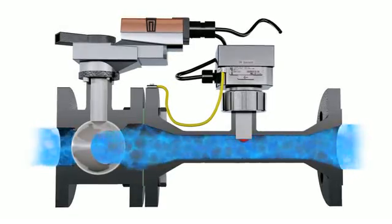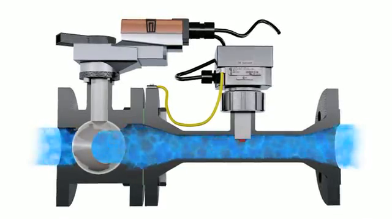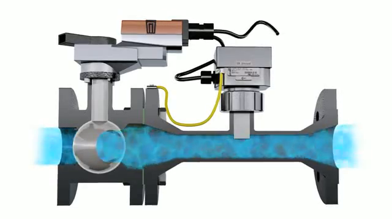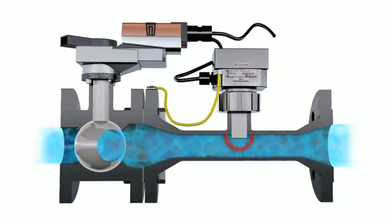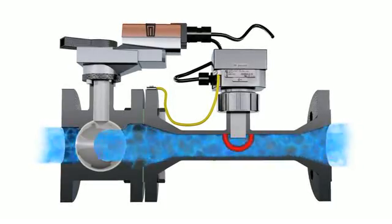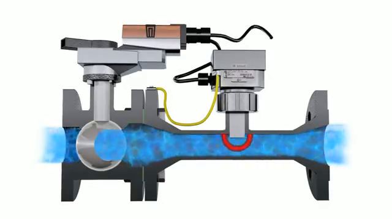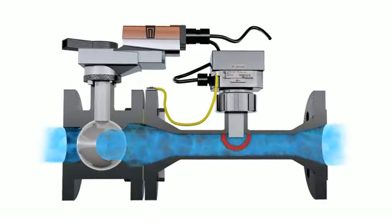The EPIV has an equal percentage flow curve. The equal percentage curve offers more stable control for heating and cooling applications. The flow characteristic can be changed from equal percentage to linear using the Belimo PC tool.